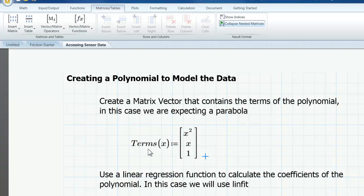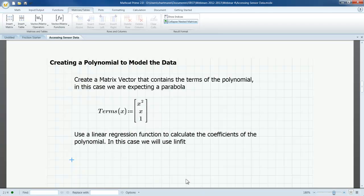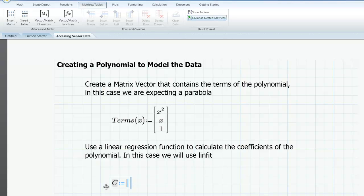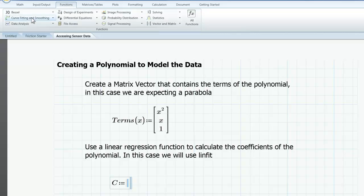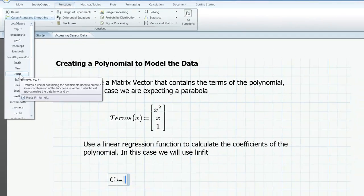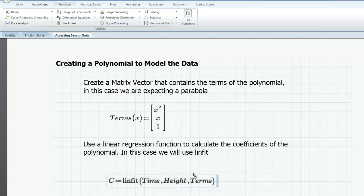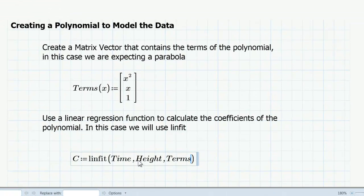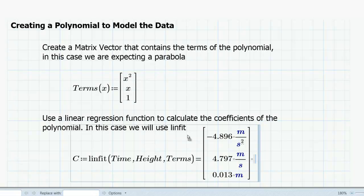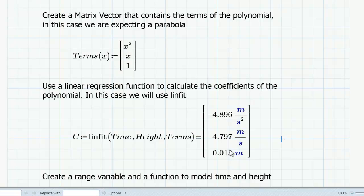MathCAD will calculate the best fit curve for the data I have in my two vectors, time and height. After using LINFIT to calculate the best fit line, I'm going to want to refer to the coefficients of x squared, x, and 1 using a variable name. So I'm going to call LINFIT in a variable definition — I'll type 'c' colon, c standing for coefficients. Then from curve fitting functions I'll find LINFIT, insert that, and type time as my x-axis vector, height as my y-axis vector, and terms as my third argument. MathCAD will return the coefficients of x squared, x, and 1.